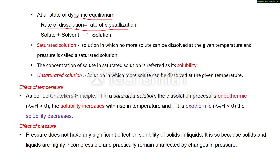At dynamic equilibrium, solute will dissolve in the solvent to make a solution, and from the solution, solute will separate out. Next is the saturated solution. A solution in which no more solute can be dissolved at a given temperature and pressure is called a saturated solution. And the concentration of solute in a saturated solution is referred to as its solubility. Remember: concentration of solute in a saturated solution is known as its solubility.